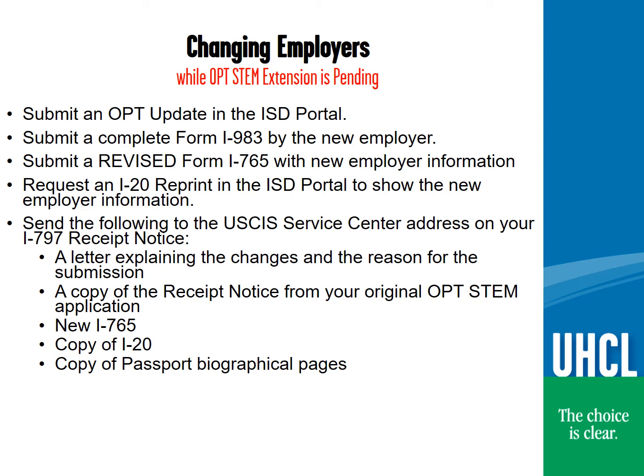Some students may change their employer while their OPT STEM extension application is pending with USCIS. If this happens to you, follow the following instructions: complete an OPT update in the ISD portal; submit a completed Form I-983 in the ISD portal with the new employer information; complete a new and updated revised Form I-765 using the new employer information and E-Verify number; request an I-20 reprint so that you can include this in your information to USCIS. You do not have to submit another check or money order as you are updating USCIS with new information and not reapplying.